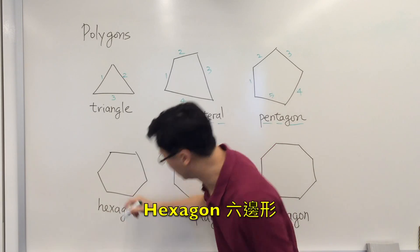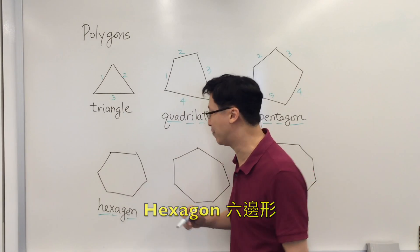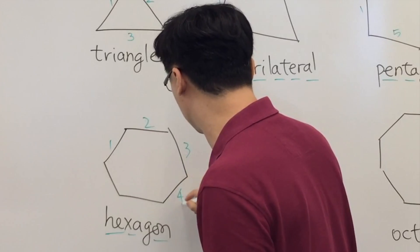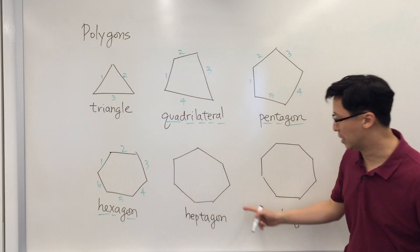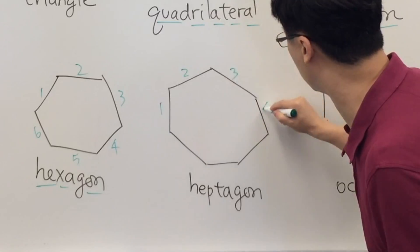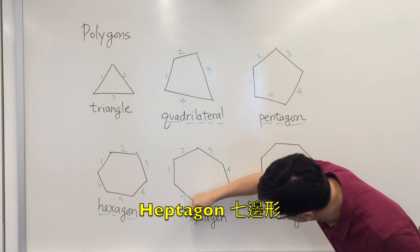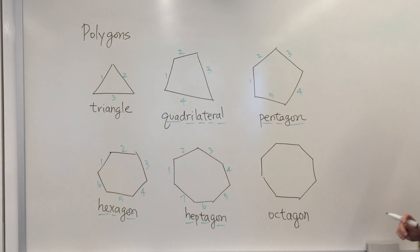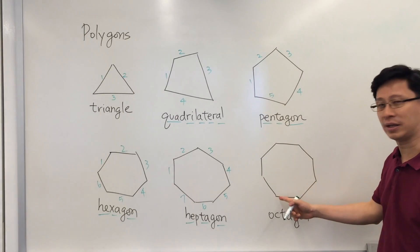Next we have a hexagon, a plane figure with six sides. And this one has seven sides — we call this a heptagon. So we have quite a lot of names in polygons.